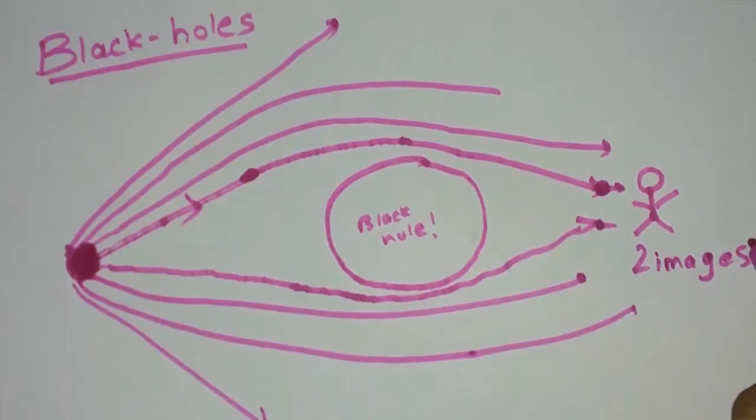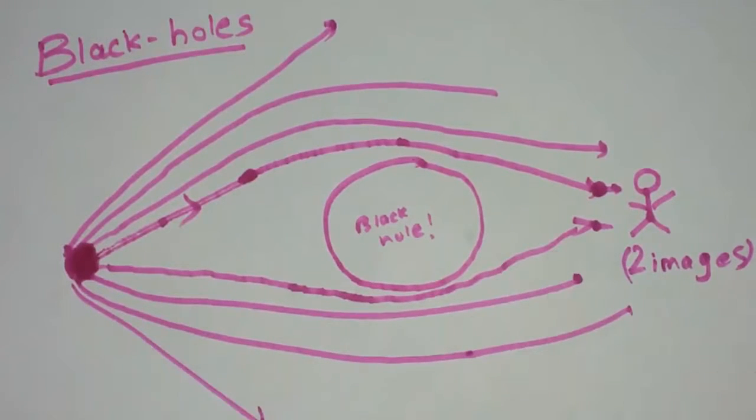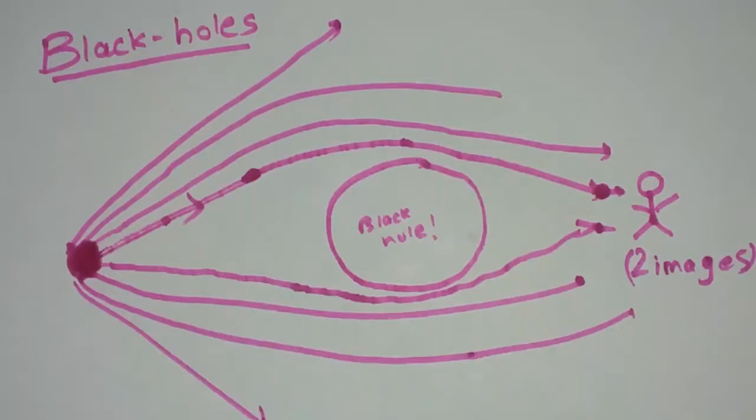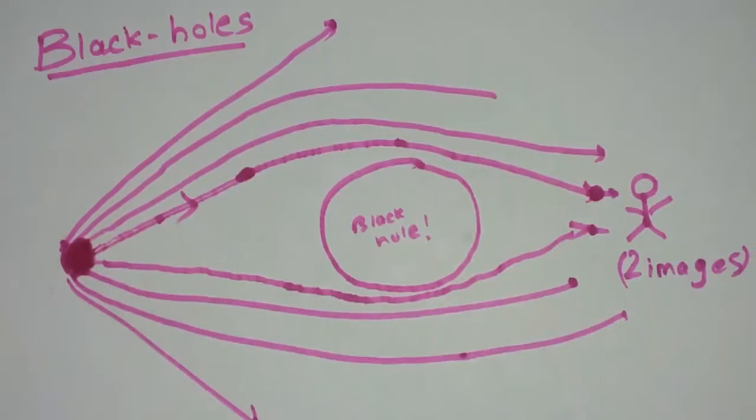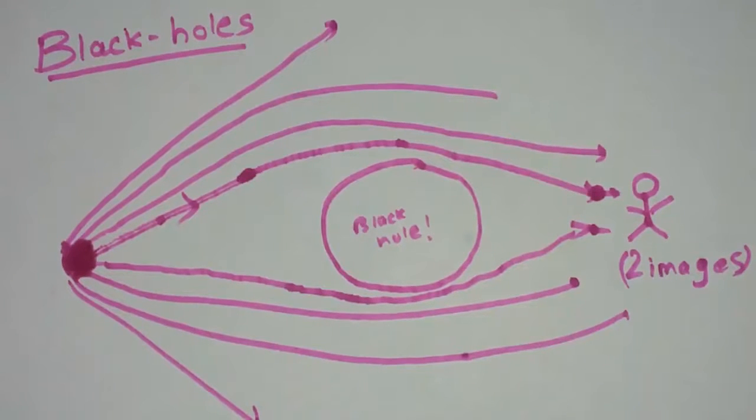That's how I can see two images. I'm here, this is the photon or light, so I get two types of images of this light: one should be a mirror image, that is this one, and one is the real image, that is this one. So that's how we can see two images in simply one thing.